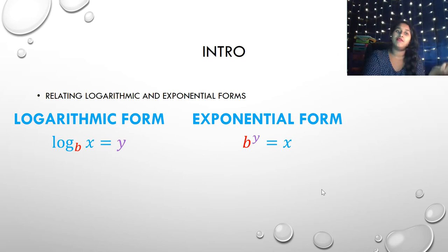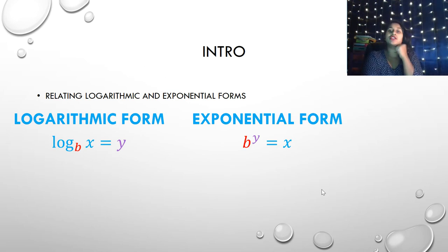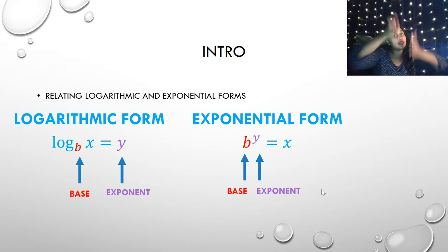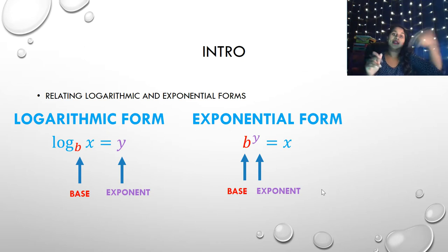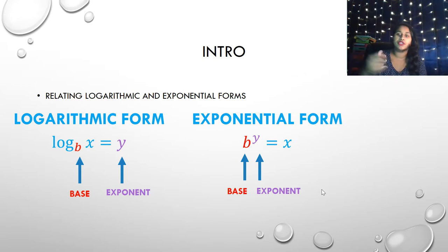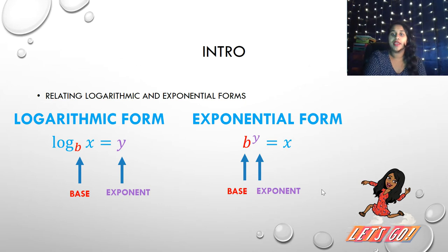Here we have the logarithmic form on the left: log base b of x is equal to y. Versus our exponential form: b to the y equals x. The bases stay the same — that's what that relation is. Log base b is the base of the exponential form, and my exponent is what my log is going to be equal to, because they are inverses — you're literally just switching their y and their x.